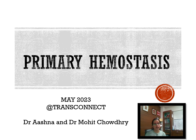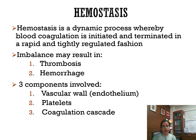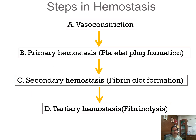Hello everyone. I am Dr. Ashna and I will be talking about primary hemostasis. Hemostasis is a dynamic process whereby blood coagulation is initiated and terminated in a rapid and tightly regulated fashion. Its imbalance may result in thrombosis and hemorrhage. Three components are involved in hemostasis: endothelium, platelets, and the coagulation cascade. Steps in hemostasis: first vasoconstriction, then primary hemostasis — formation of a platelet plug, then secondary hemostasis — fibrin clot formation, and finally tertiary hemostasis — fibrinolysis.